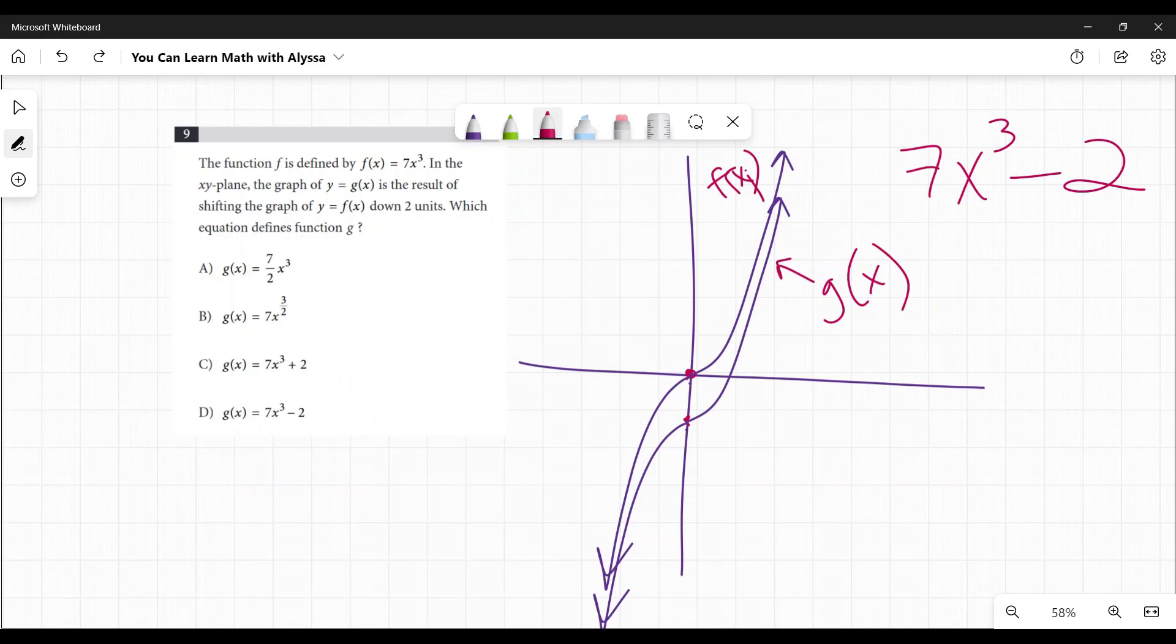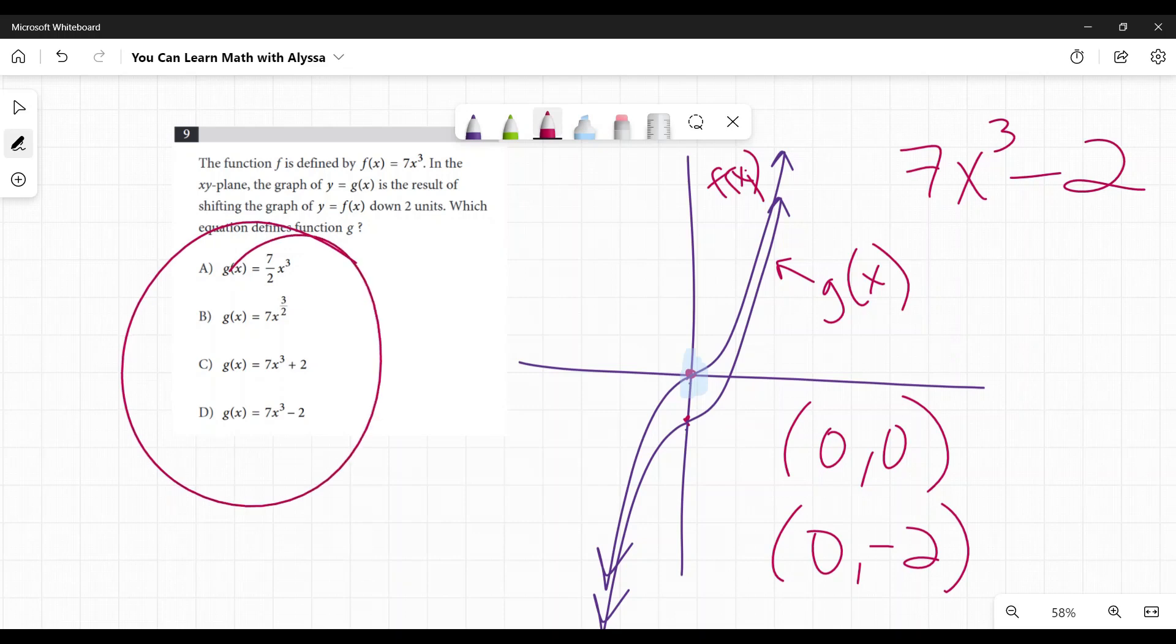Now, if you get on the test and you do not remember this, you can just sort of plug and play. You can put numbers in there. So I would look right here, that point (0, 0) and go, okay, if it moves two units down, it's going to be at (0, -2).